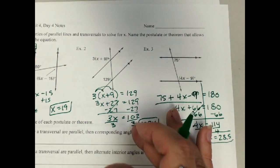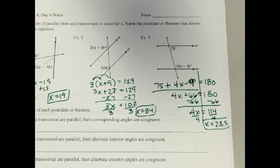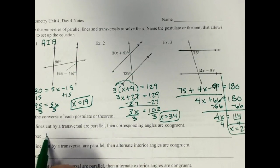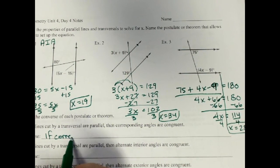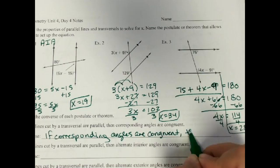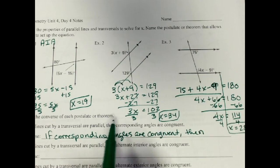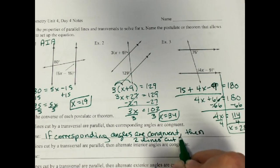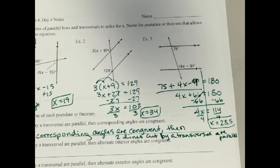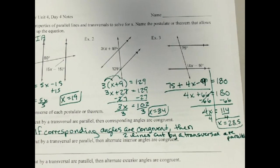Now we're going to have the converse of each postulate. Remember, the converse just means to switch the if and the then statements. So if two lines cut by transversal are parallel, then their angles are congruent. So when I switch it, I'll have if corresponding angles are congruent, then two lines cut by transversal are parallel. So I just switch the if and the then. So do that on these other ones. Pause the video and do that for the next three.